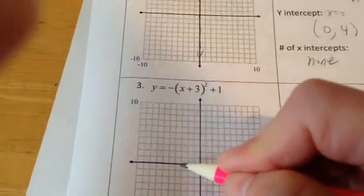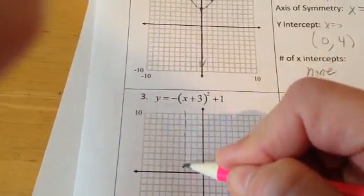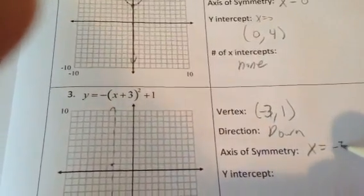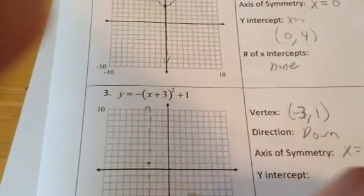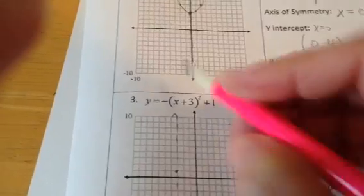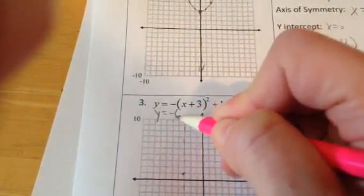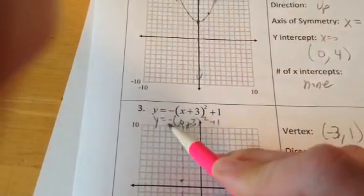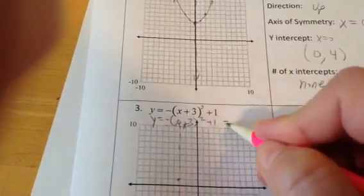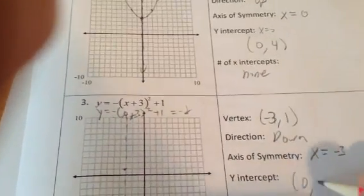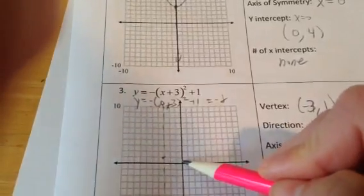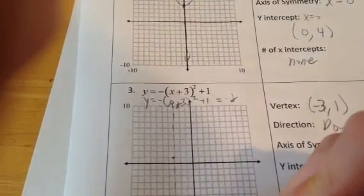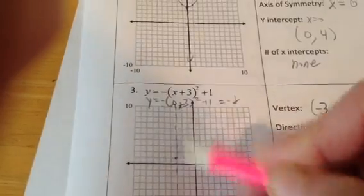Vertex negative 3, 1. My axis of symmetry goes straight through the vertex, so the axis of symmetry is always x equals whatever the x in the vertex is — so x equals negative 3. My y-intercept is when x is 0, so y will be negative (0 plus 3) squared plus 1. 3 squared is 9, negative 9 plus 1 is negative 8. So when x is 0, y is negative 8 — that's 8 units down. I've got that point, and I can get a point on the other side of the axis of symmetry for free: this is 3 away, so I've got 3 away on the other side.